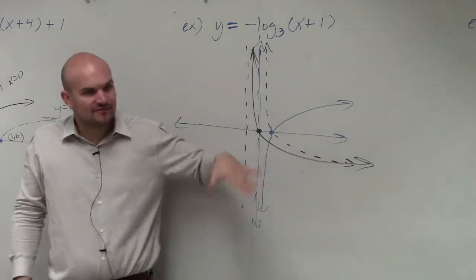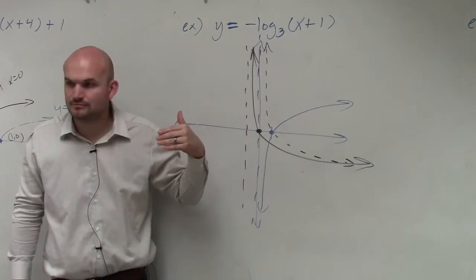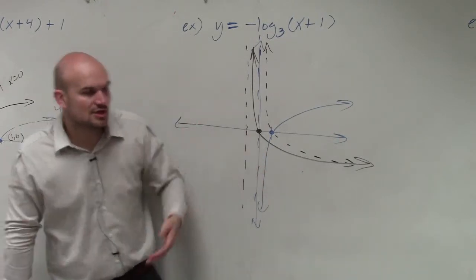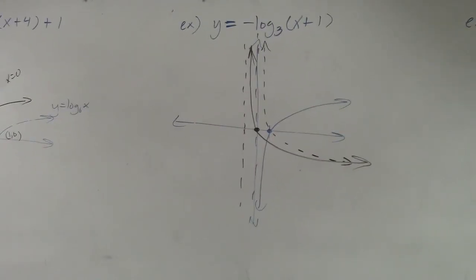And then I have my graph look something like that. So the best thing I like to do is reflect it first and then apply my transformations left, right, up, down. And then you can see that's what your graph would look like. So the difference, basically, what we have learned today is from logarithms.